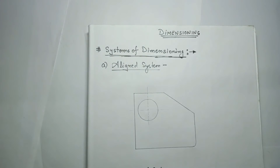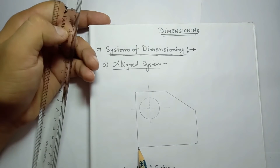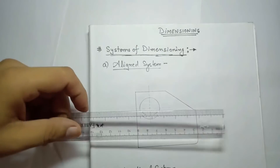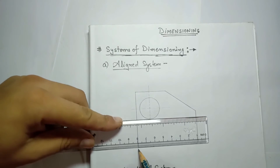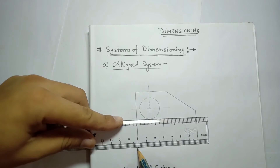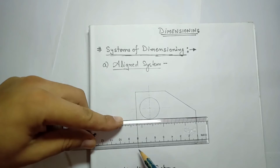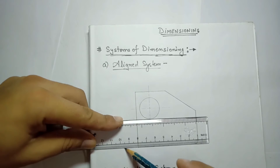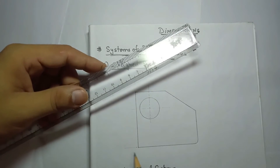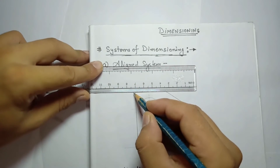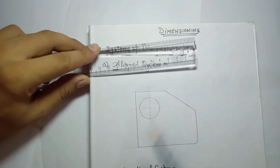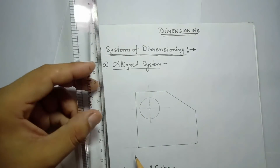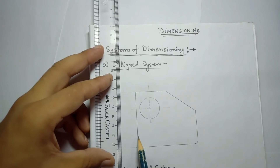Here we have the object line with a continuous thick line. We want to give the dimension of this edge. The first element you have to draw is the extension line. The extension line will have a 2mm gap from the object line, so put the scale and exactly measure a 2mm gap. The main purpose is that it should not touch the object line. Draw a very light, thin line — just touch it on the sheet and give direction. Extension lines should be continuous thin lines.